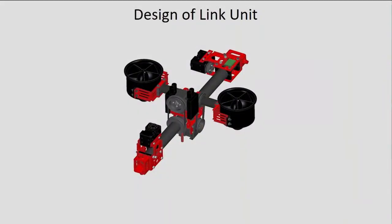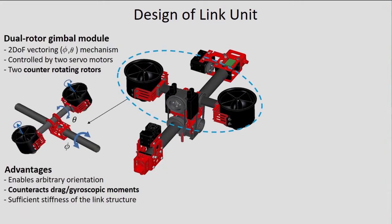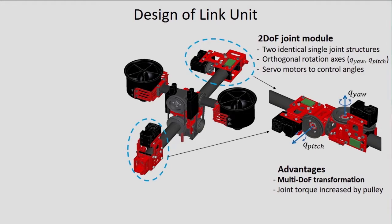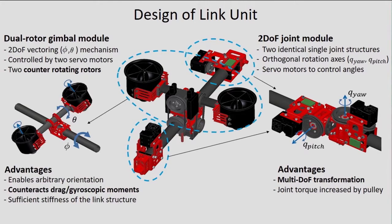Regarding the design method, we developed a generalized link unit. The first important component is the dual-rotor gimbal module. We defined the two-DOF vectoring gimbal mechanism as the gimbal module, controlled by two servo motors. The most important attribute of this module is that the counter-rotating rotors can counteract drag moments and gyroscopic moments, which benefits the derivation of modeling and control. The second important component is the two-DOF joint module, composed of two identical single joint structures with orthogonal rotation axes, also controlled by a servo motor. These two fundamental modules enable the multi-DOF aerial transformation.